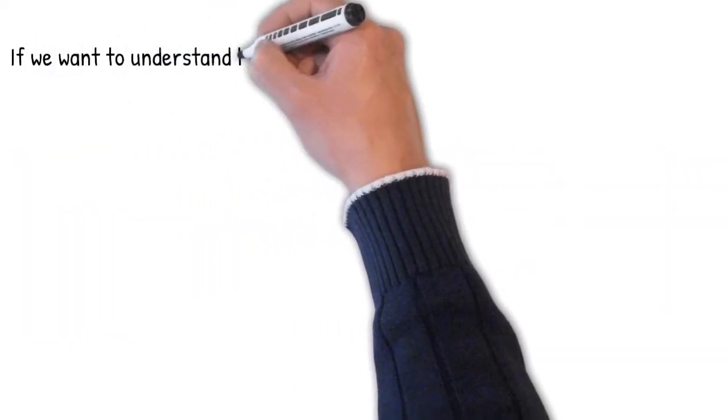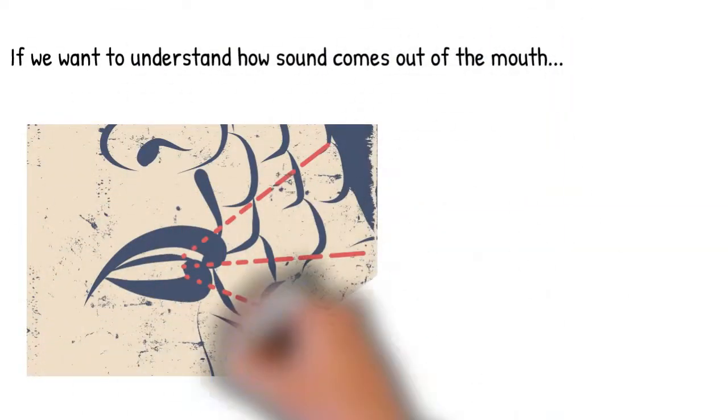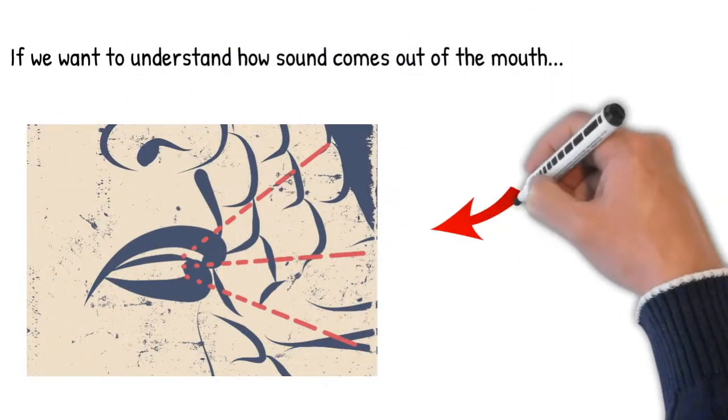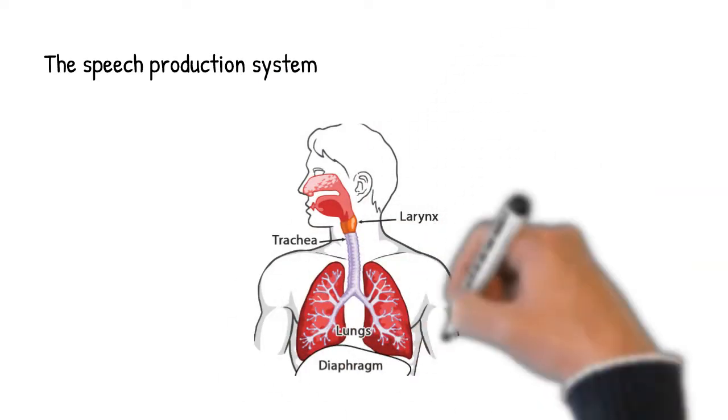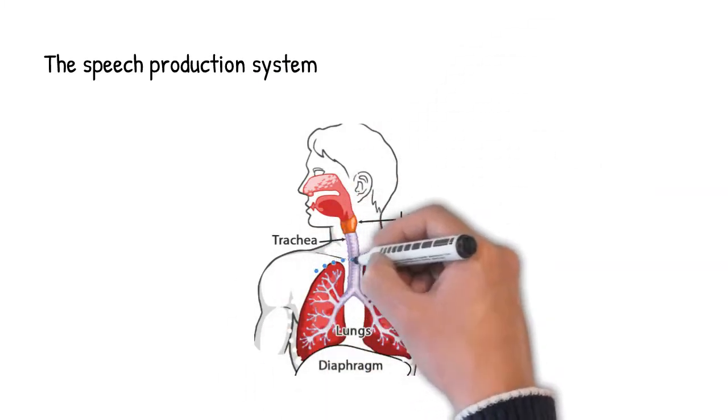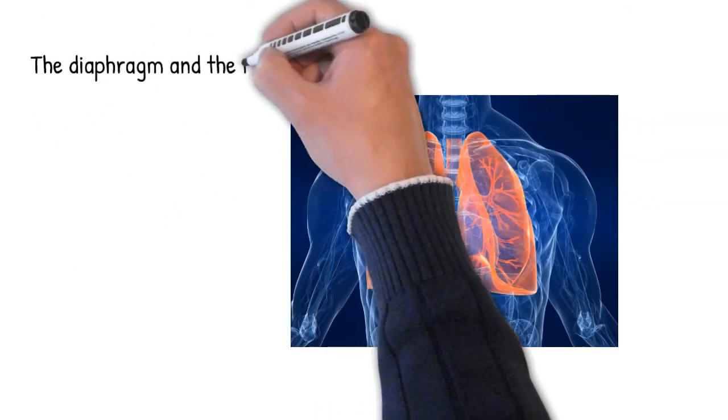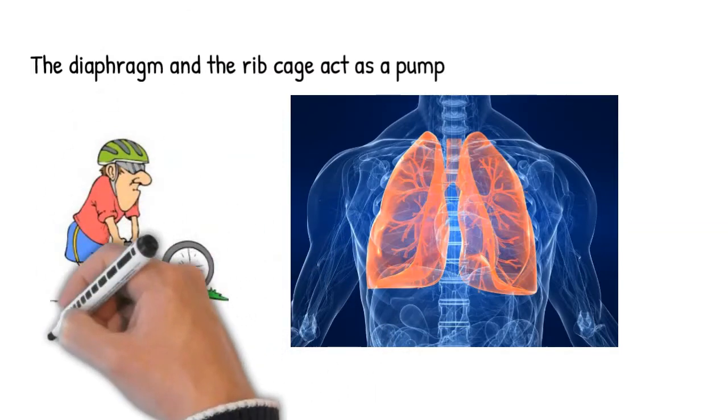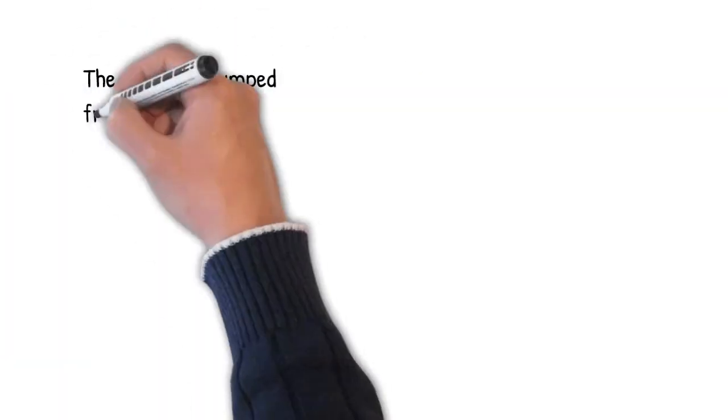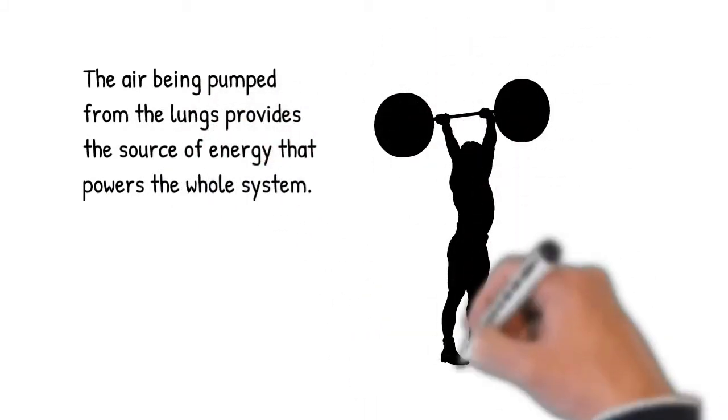To understand what we mean by talking about consonant sounds being made with vibrating vocal cords, we really need to think about the whole system involved in speech production. When we produce speech, the action really all starts at the lungs. The diaphragm and the rib cage act as a pump. And the air being pumped up from the lungs is the energy source that powers the whole system when we speak.